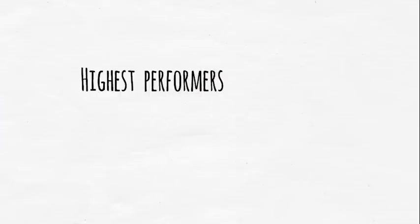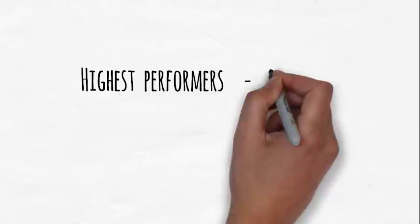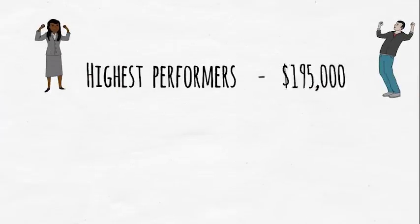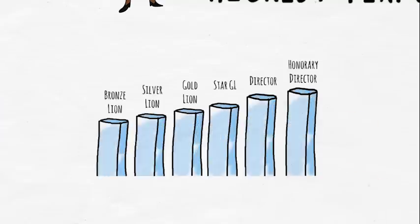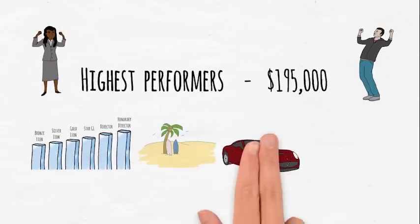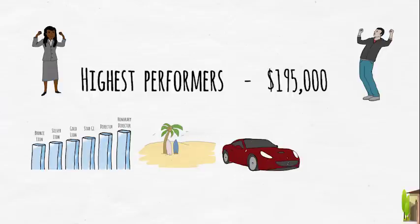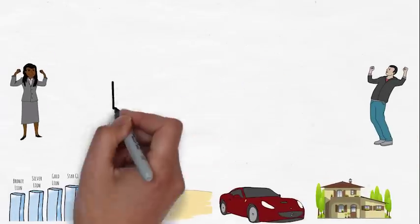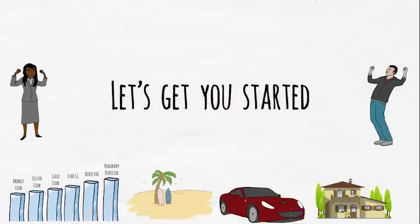The last incentive is the special awards, given to the highest performers up to $195,000. Again, to qualify for this, you will need to achieve one of the honorary ranks. This is where you can look forward to receiving a dream holiday, a prestige car, or even a luxurious sun-soaked villa. We'll look at the bonuses in more detail, but for the moment, let's get you started.